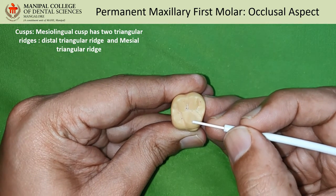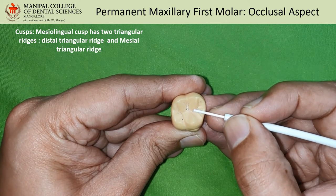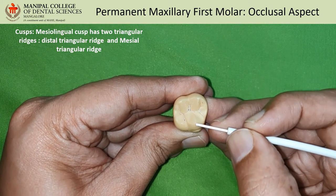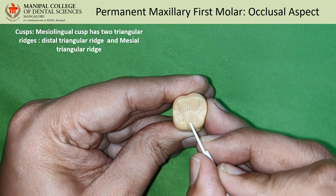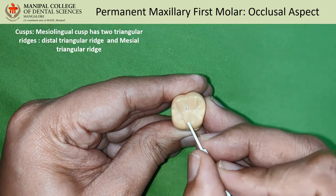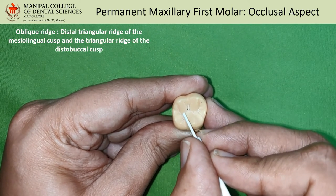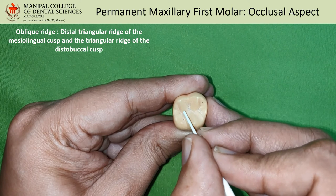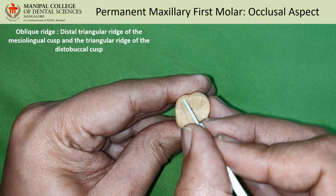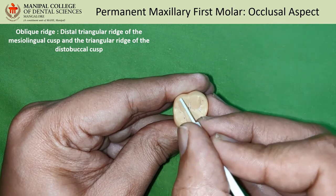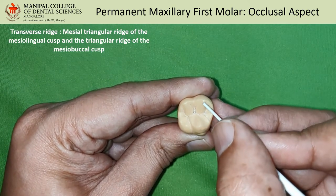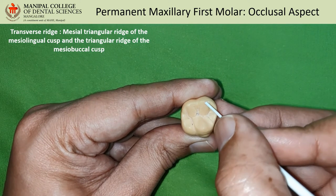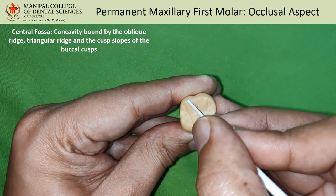The mesio-lingual cusp has two triangular ridges. The first triangular ridge goes towards the mesio-buccal cusp and joins the triangular ridge of the mesio-buccal cusp. The mesio-lingual cusp also has another triangular ridge called the distal triangular ridge, which goes in an oblique direction and meets the triangular ridge of the disto-buccal cusp. This joining is called the oblique ridge.